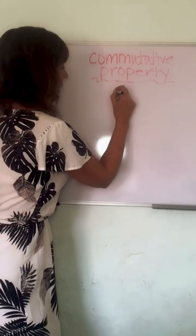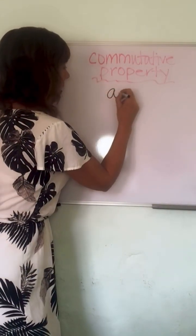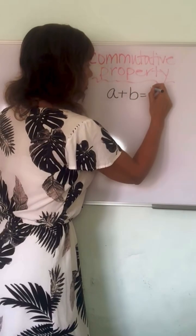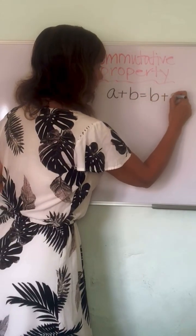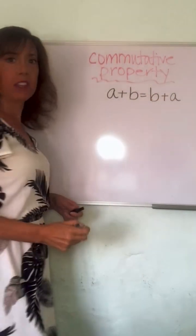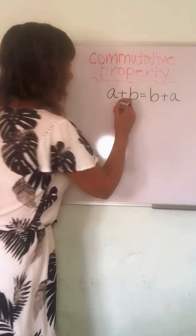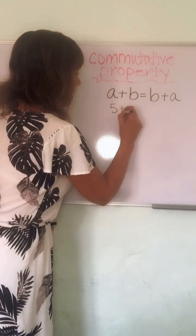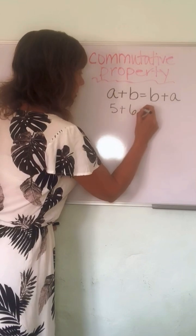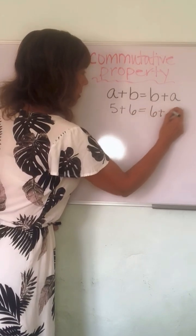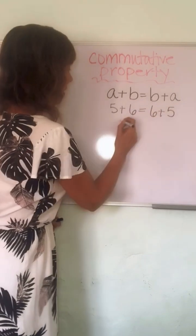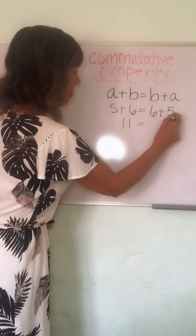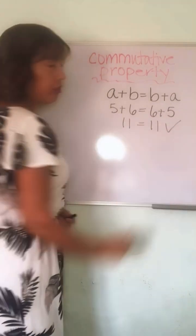We can say A plus B is equal to B plus A. For example, 5 plus 6 equals 6 plus 5. 11 equals 6 plus 5 equals 11. It's true.